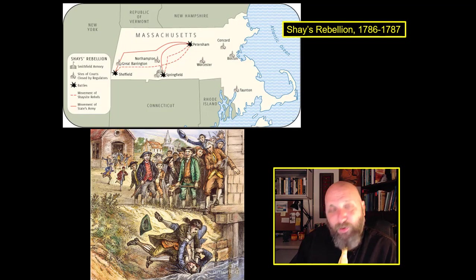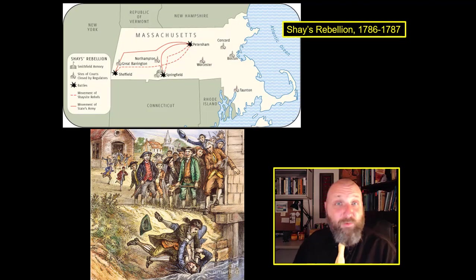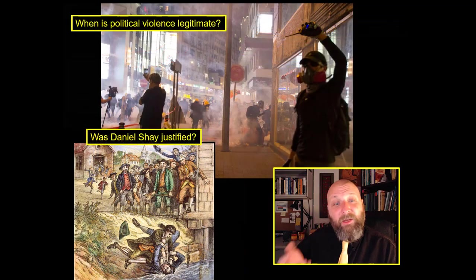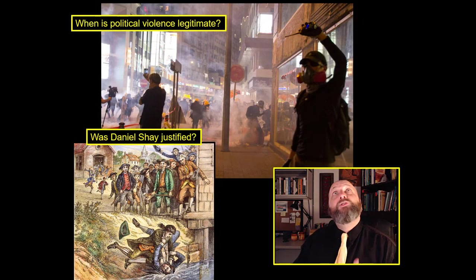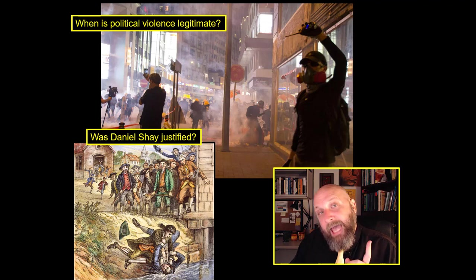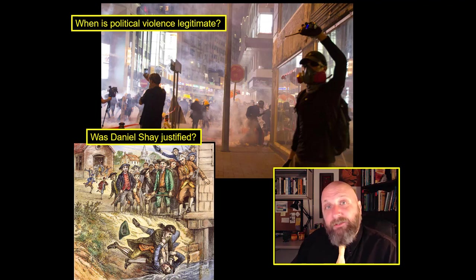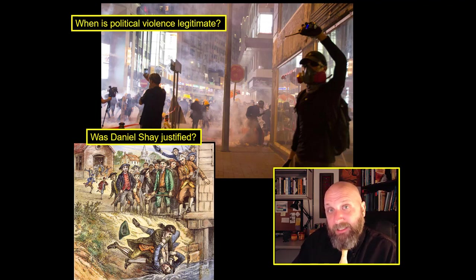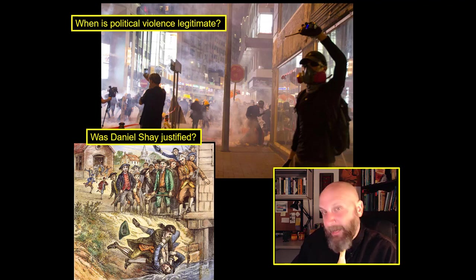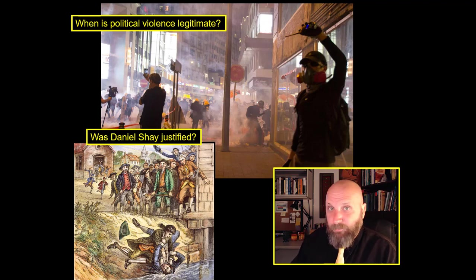The crushing of Shays' Rebellion is seen as this really awful act of complete and utter tyranny, and the rest of the states are completely horrified. This goes back to our question about political violence: is political violence legitimate, and when? Was Daniel Shays justified in his uprising? Did he have legitimate complaints? Daniel Shays himself is never captured — he flees west and ends up in Ohio. But the crushing of his rebellion is seen as terrible, and it prompts serious reflection on the state of the country.